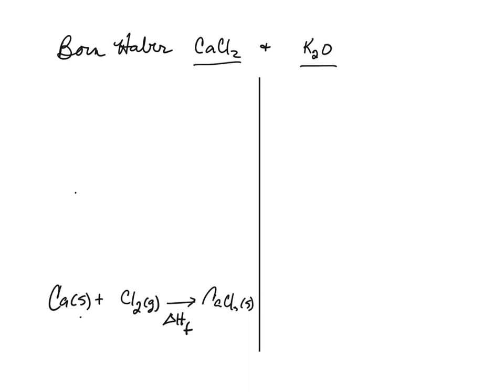On the other side, I want to write the formation reaction for potassium oxide, K₂O. We are going to form it as a solid from its elements. Potassium is a metal and a solid, and I will need two of them to balance it. Oxygen is diatomic and a gas, and I need a one-half coefficient to ensure I only have one mole of K₂O. So this is the formation reaction by definition.